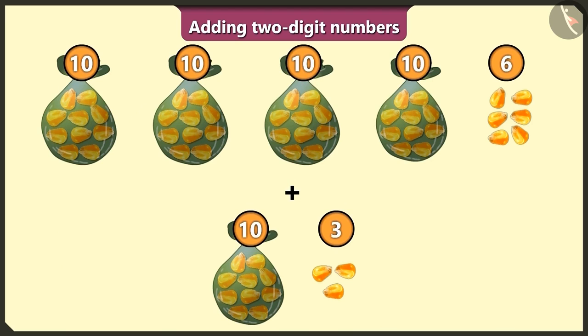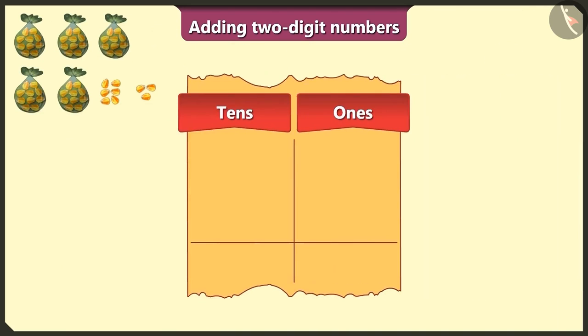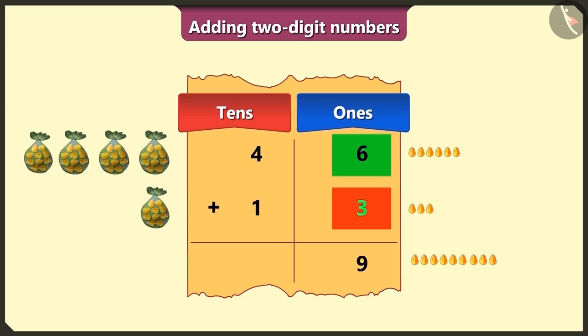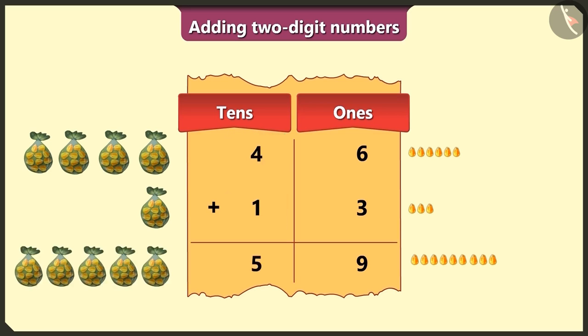So how are we going to add them both? For the number 46, we will write 4 in the tens box and 6 in the ones box. To add 13 to this number, we write 1 in the tens box and 3 in the ones box. Now, first we will add the numbers in the ones box. 6 and 3 will make 9. Now in the tens box, the numbers 4 and 1 will add up to 5. So how many grains do we have here in total?